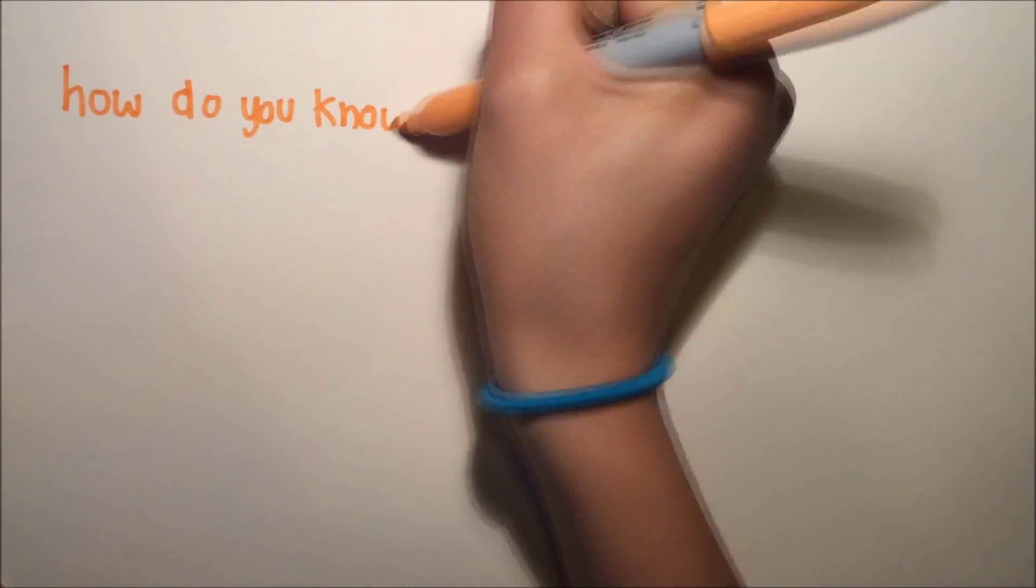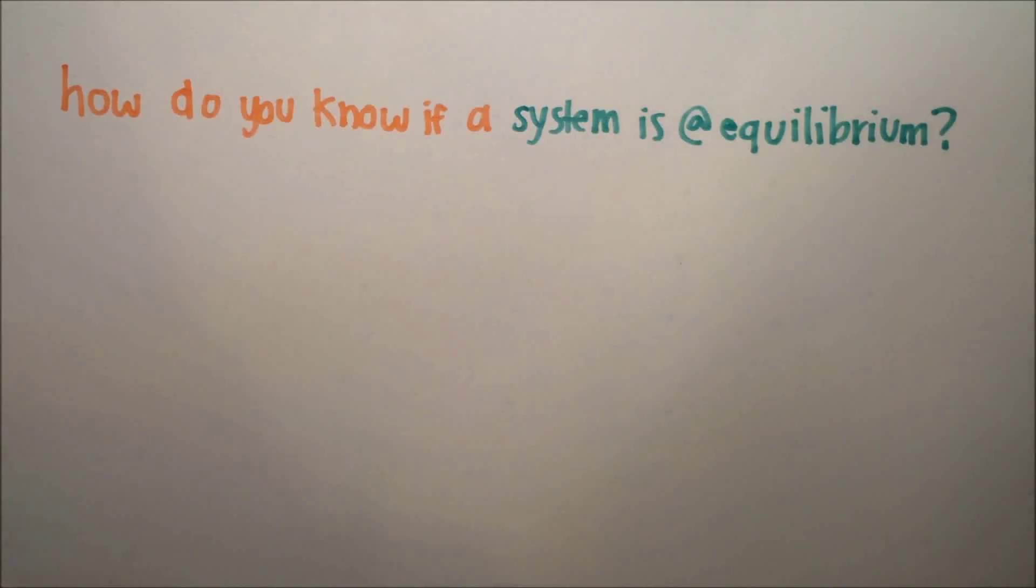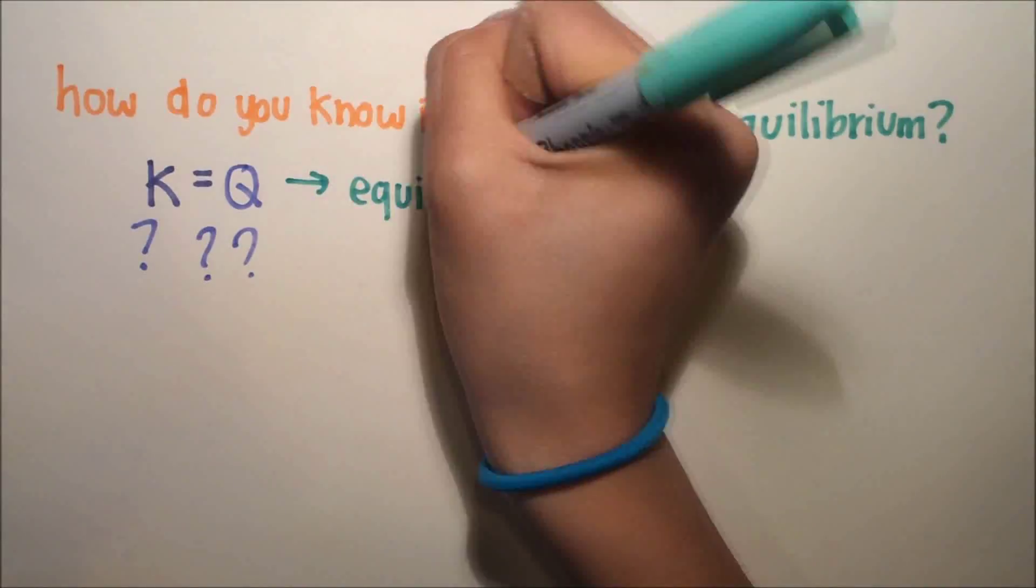So now that we know what equilibrium is, how do we know if a system is at equilibrium? Well, basically, if K is equal to Q, which we'll get to in a minute, then the system is at equilibrium.